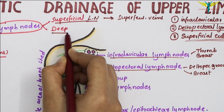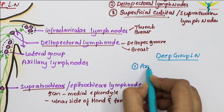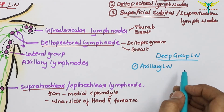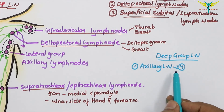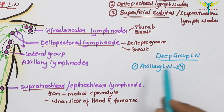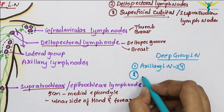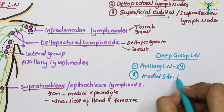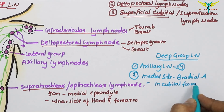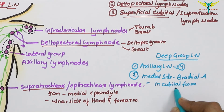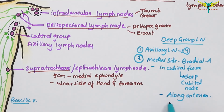The deep group of lymph nodes includes the axillary lymph nodes, present in the axilla and divided into four sets — these are the main lymph nodes of the upper limb. The second deep group consists of a few lymph nodes lying along the medial side of the brachial artery in the cubital fossa, at the bifurcation of the brachial artery — called the deep cubital node. Sometimes deep lymph nodes are also present along the arteries of the forearm.